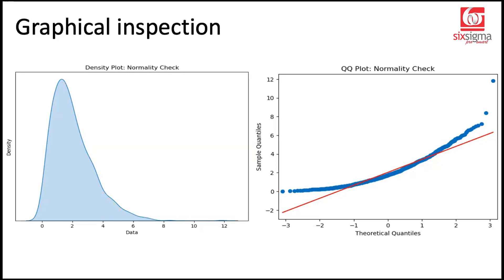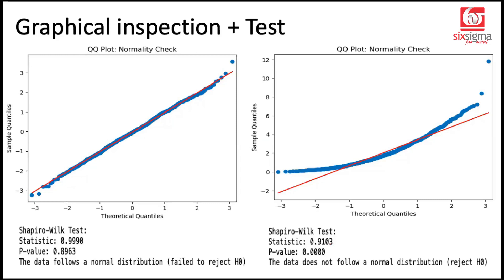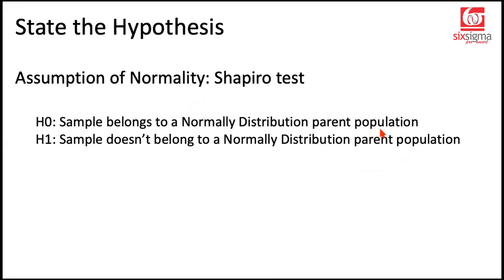So one way is to conduct a test. The other way is to visually inspect or graphically inspect. What is best? Well, it will be best if you do both together. For example, I'm showing you both the quantile plots again. I'll show you how to perform the test later, but let me show you the test results in these two cases. So in the first case, if you see the p-value that we obtained for Shapiro test is 0.89, which means we failed to reject the null hypothesis. And what was the null hypothesis? The sample belongs to a normally distributed parent population. We failed to reject it.